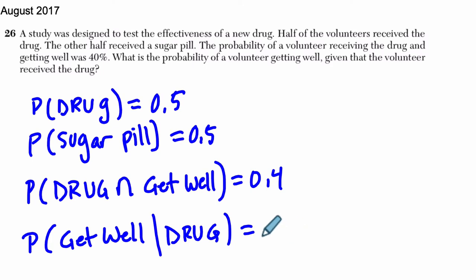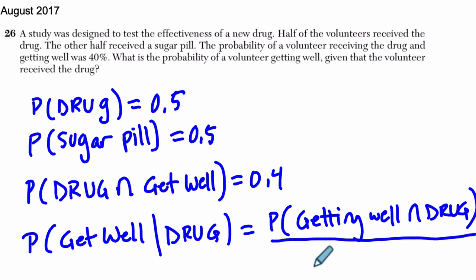Well, that probability is simply going to be the probability of getting well and receiving the drug. I said it backwards, but we had the same idea, drug and getting well, getting well and drug, same idea. So that's the point four that we already have, divided by the probability of getting the drug. That's it.